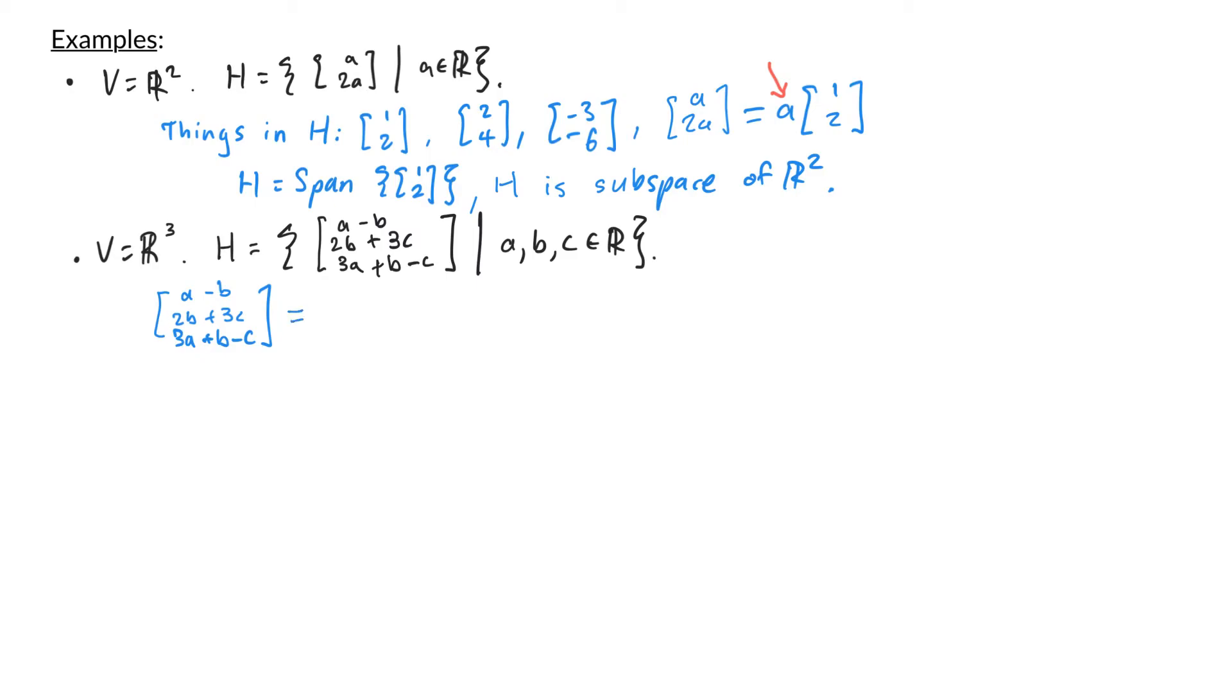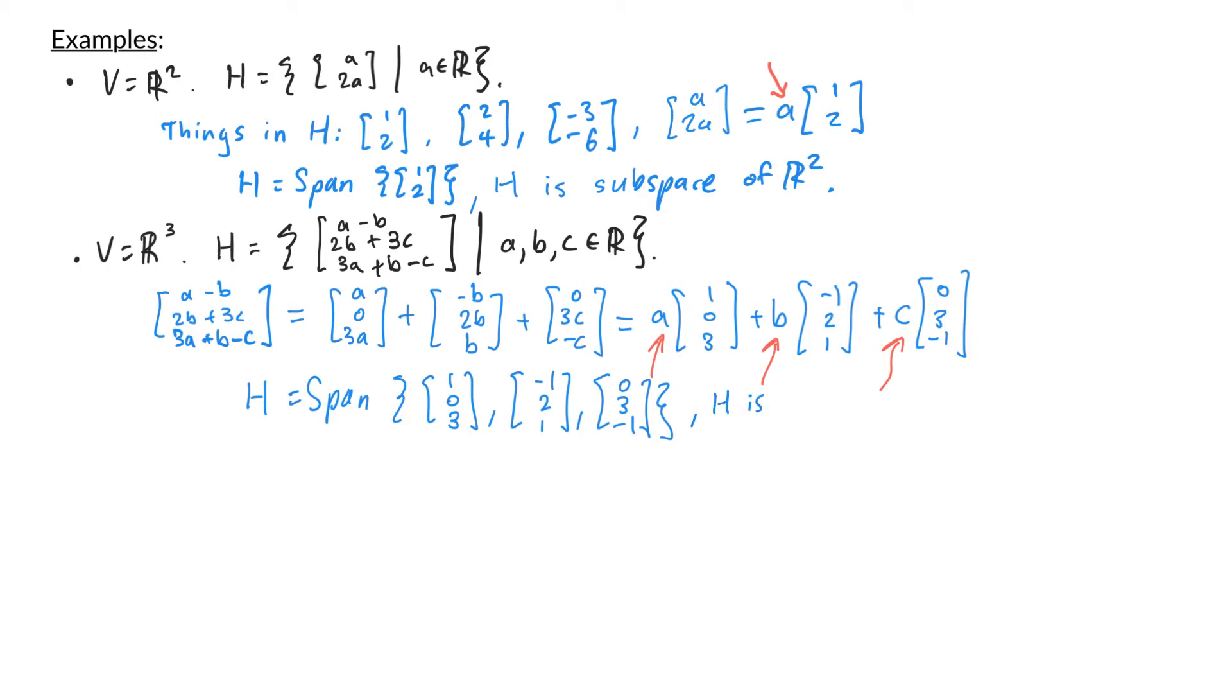So this expression can be written as a, 0, and 3a plus negative b, 2b, and b and lastly plus 0, 3c, and minus c. Factoring out the a from the first vector I have a times 1, 0, 3 plus b times negative 1, 2, 1 plus c times 0, 3, negative 1. Now since a, b, and c can be any real numbers we can think about h as the span of the vectors 1, 0, 3, negative 1, 2, 1, and lastly 0, 3, negative 1. And since h is the span of a collection of vectors from our theorem we can conclude that h is a subspace of r3.